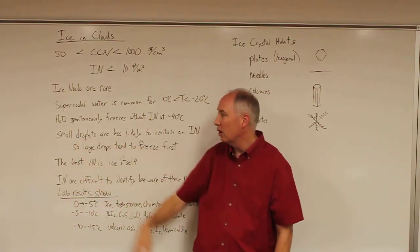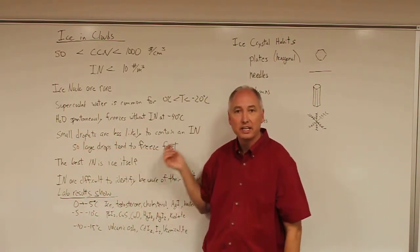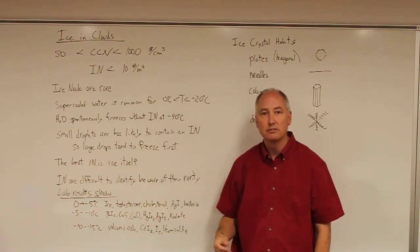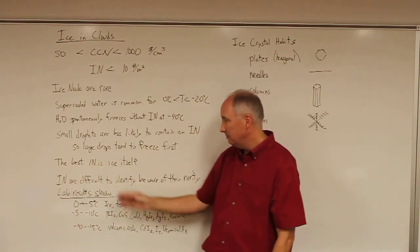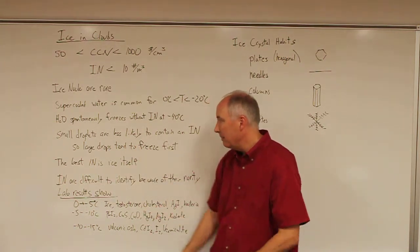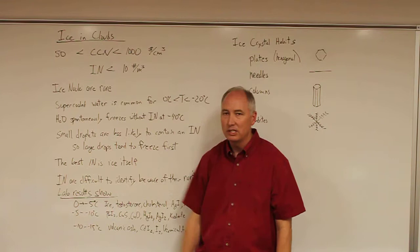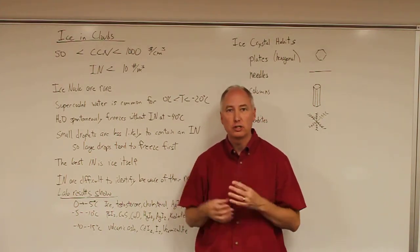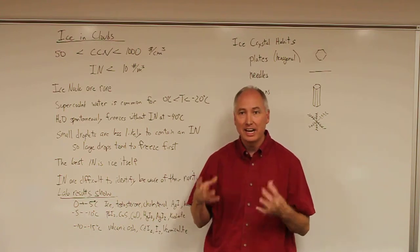which puts a lower bound on the temperature at which you can observe supercooled droplets. We also observe that small droplets are less likely to contain an ice nuclei, and as a result, large droplets tend to freeze first. Small droplets are more likely to remain supercooled. Of course, the best ice nuclei is ice itself—it has the perfect lattice structure to nucleate an ice crystal.